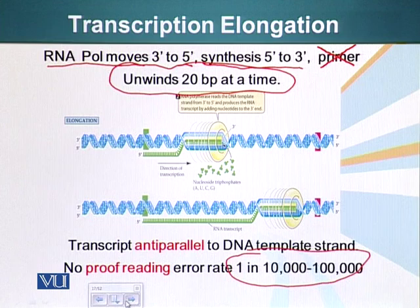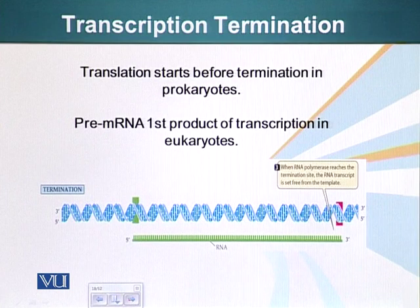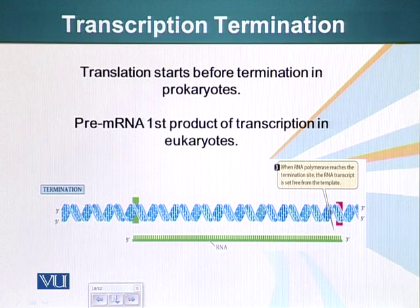Once the RNA polymerase has made the RNA, it encounters the termination site. The termination site is also a sequence of nucleotides that tells RNA polymerase to stop the transcription process.